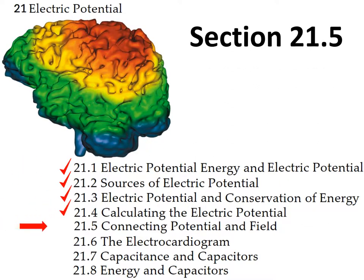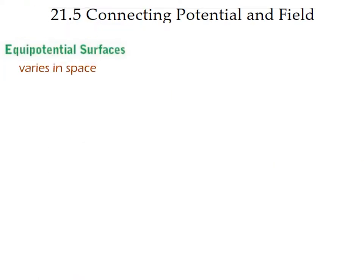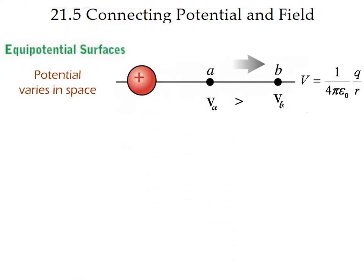Section 21.5. In this section we will continue connecting the potential with the electric field, which we began doing before. We begin by defining potential surfaces — we talked about these surfaces before in the case of parallel plates.